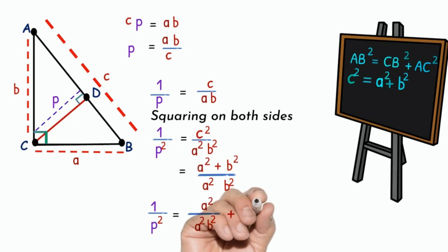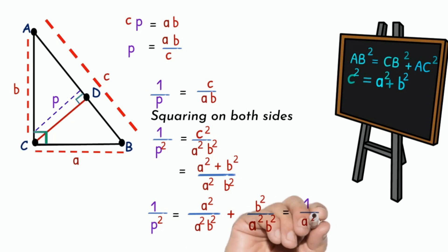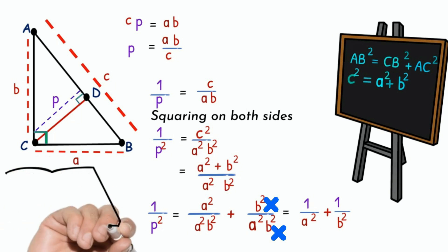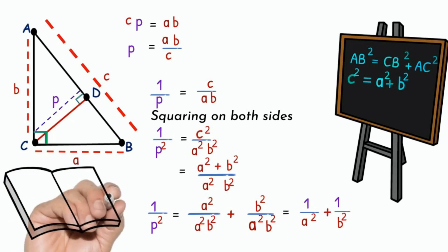Equals A square by A square into B square plus B square by A square into B square. After dividing A square and A square, B square and B square, we get 1 by A square plus 1 by B square.